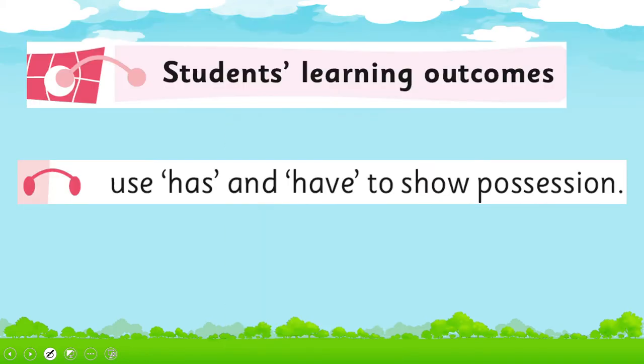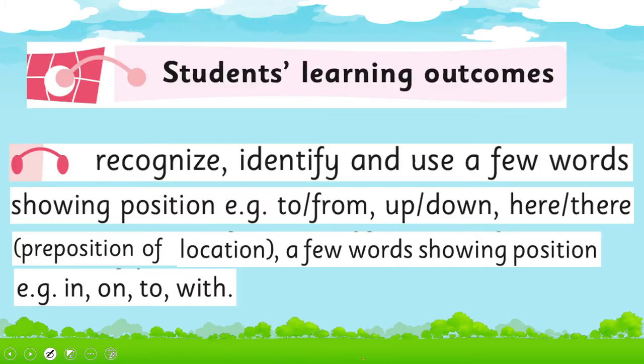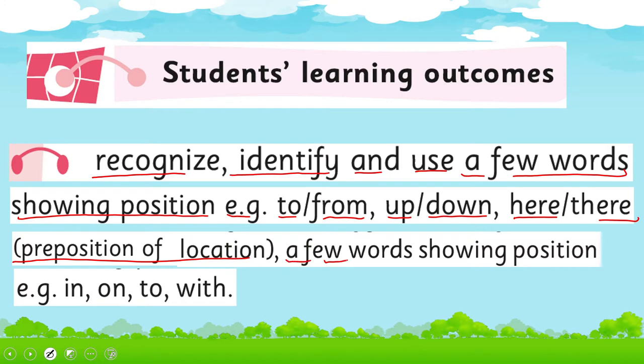The SLO will cover is to use has and have to show position. Lecture 4, again under the title of grammar, we learn about position words and will cover page 33 of your book. The SLO will be to recognize, identify, and use a few words showing position, that is to, from, up, down, here, there, prepositions of location, a few words showing position, for example in, on, to.